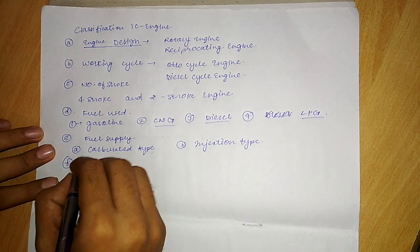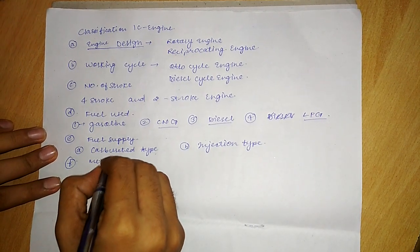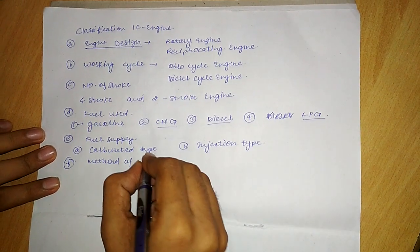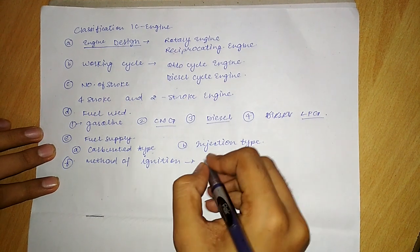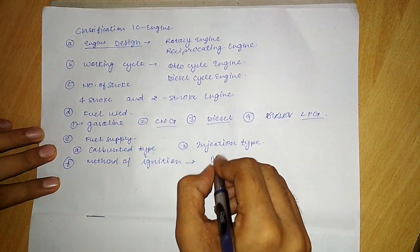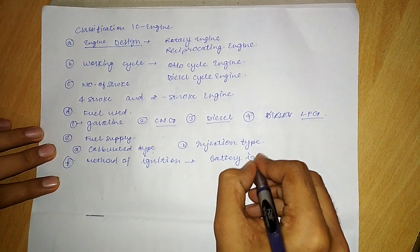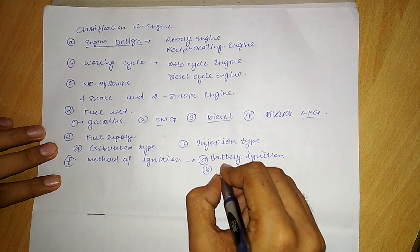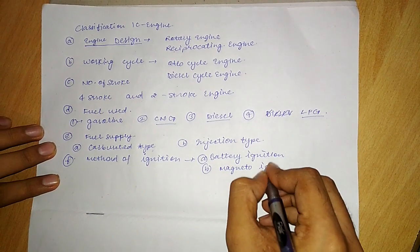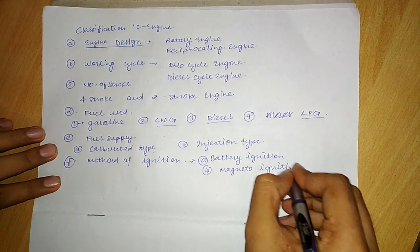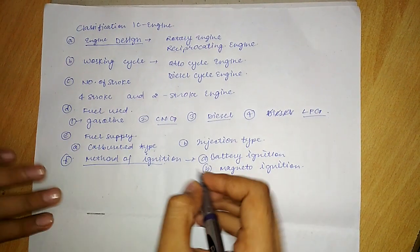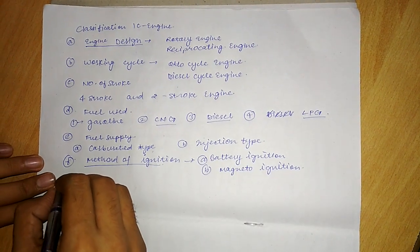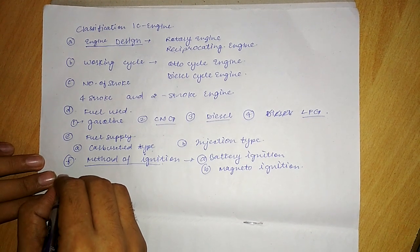The sixth classification is on the basis of method of ignition. It is further divided into two types: battery ignition and magneto ignition. So on the basis of method of ignition, these engines are classified into battery ignition and magneto ignition.